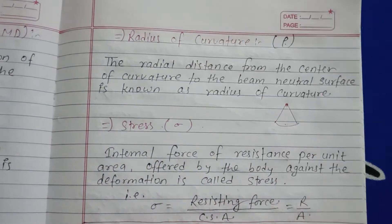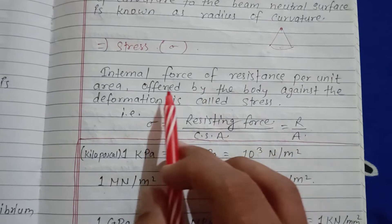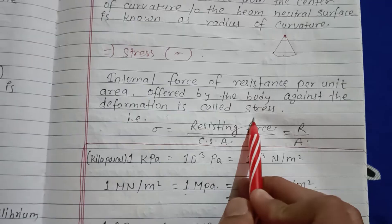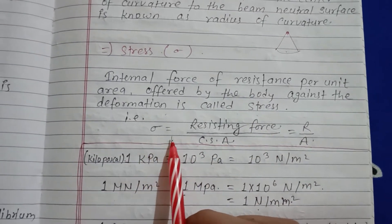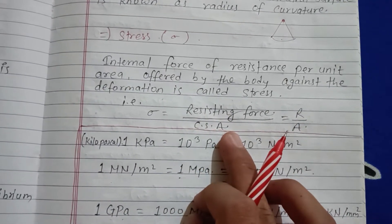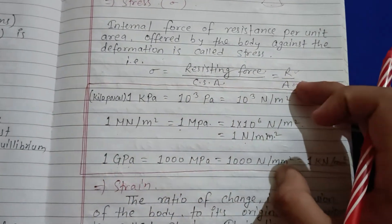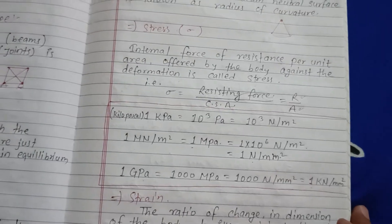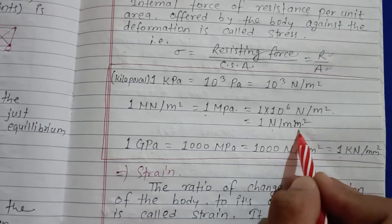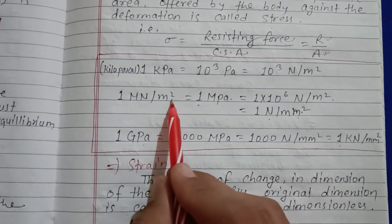Stress: it is the internal force of resistance per unit area offered by a body against deformation. Mathematically, stress equals resisting force upon cross-sectional area. The unit of stress is newton per mm² or MPa.